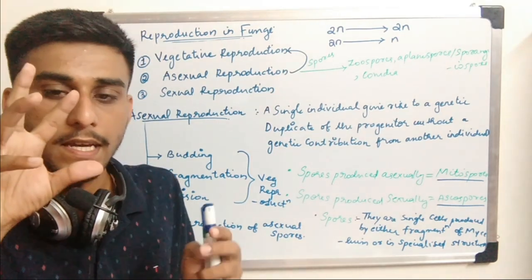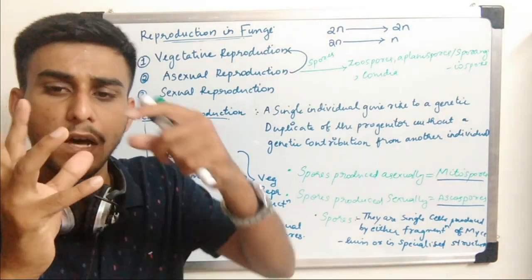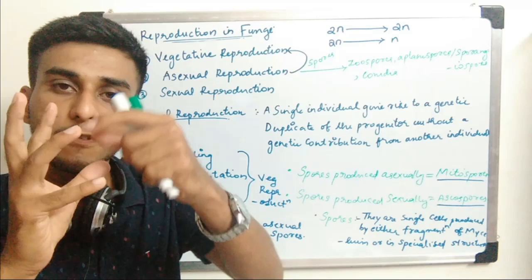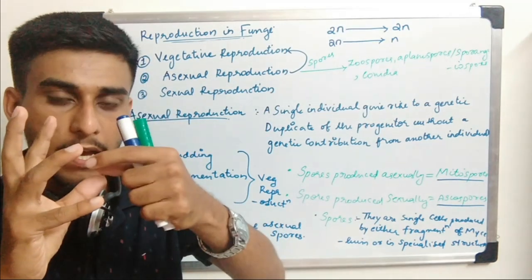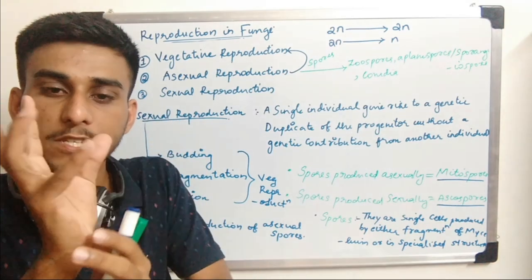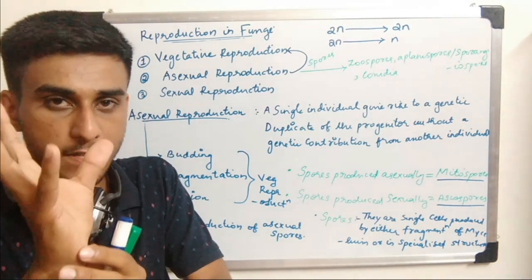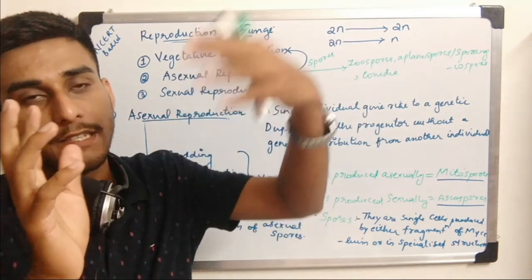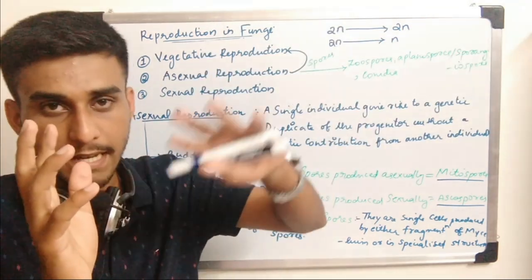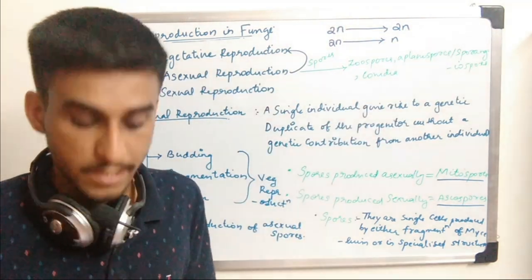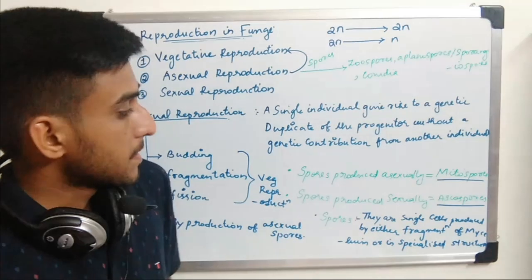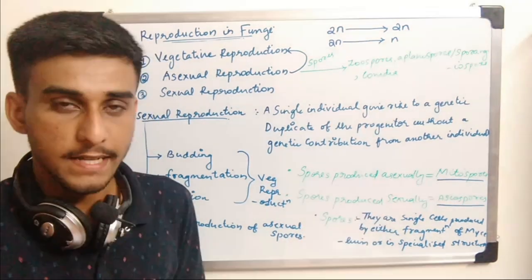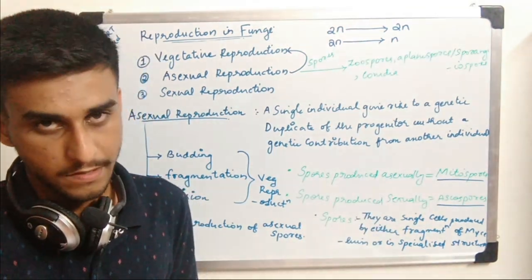Inside a sporangia, many spores will be produced mitotically. When the condition is favorable, the sporangia breaks and the spores are released, taken by different agents. The spores produced asexually are mitospores, while spores produced sexually are known as ascospores.